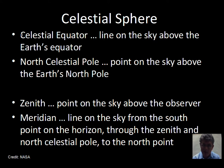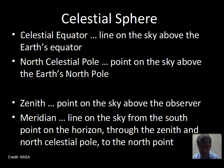The north celestial pole is that point on the sky directly above the Earth's rotation axis, above the Earth's north pole. The star Polaris is very close to that point on the sky for a few hundred years — it's very close. We'll talk about that later and discuss the concept of precession. But we have a convenient object right now: the star Polaris, very near the north celestial pole, which is a special point of reference on the sky.